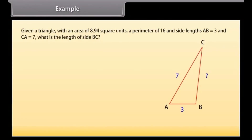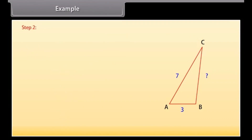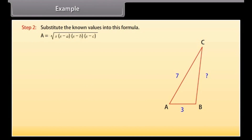Given a triangle with an area of 8.94 square units, a perimeter of 16 and side lengths AB = 3 and CA = 7, what is the length of side BC? Step 1: Calculate the semi-perimeter S = perimeter / 2. Here the perimeter is 16, therefore S = 16 / 2 = 8. Step 2: Substitute the known values into the formula A = √(S × (S−A) × (S−B) × (S−C)). Since the value of BC is not given, let X be the length of BC.